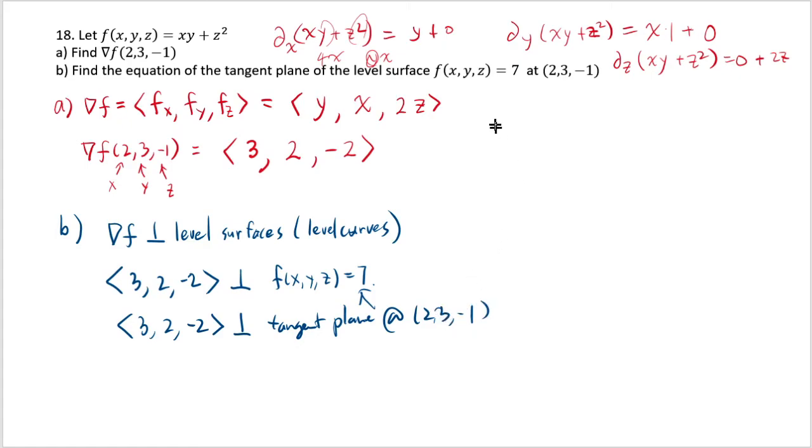And if you recall, the equation of the plane is simply a(x - x1) plus b(y - y1) plus c(z - z1) equal to 0, where a, b, c is the normal vector. And x1, y1, z1 is a point on the plane.